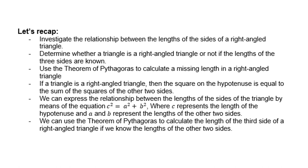Let's recap. Investigate the relationship between the lengths of the sides of a triangle and of a right-angled triangle to determine whether Pythagoras applies. Determine whether a triangle is right-angled or not if the lengths of the three sides are known. Use the theorem of Pythagoras to calculate the missing length in a right-angled triangle. If a triangle is right-angled, the square on the hypotenuse equals the sum of the squares on the other two sides. We express this as c squared equals a squared plus b squared, where c is the hypotenuse and a and b are the other two sides. Take note: we can use different letters for different sides. We can use the theorem of Pythagoras to calculate the third side if we know the other two.